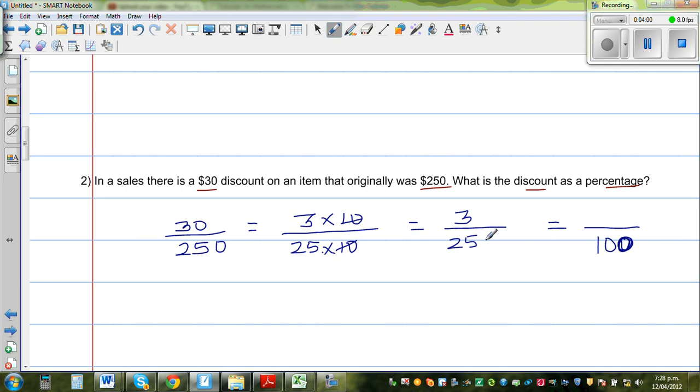So the same thing: 25 times 4 is 100. So you do the same thing to the top number, which is 12 out of 100. So the answer is 12%. Just like that. So that is a 12% discount in the sale.